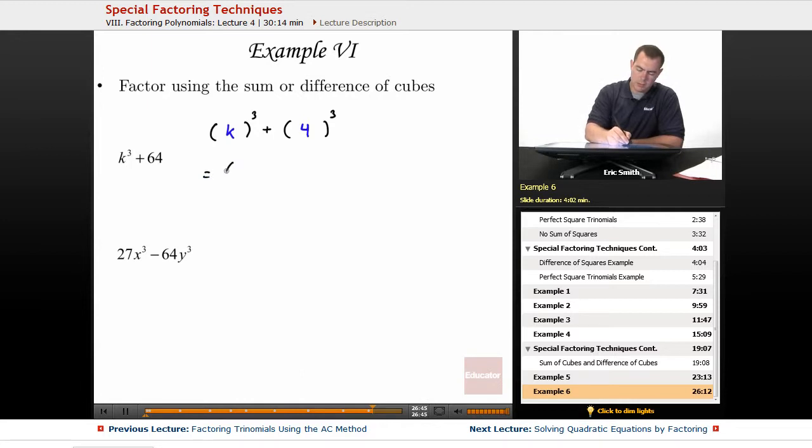So we'll think of breaking this down into one small piece and one larger piece. Now we'll go ahead and write down what these pieces are. So I have k, 4, k squared, k times 4, and 4 squared.